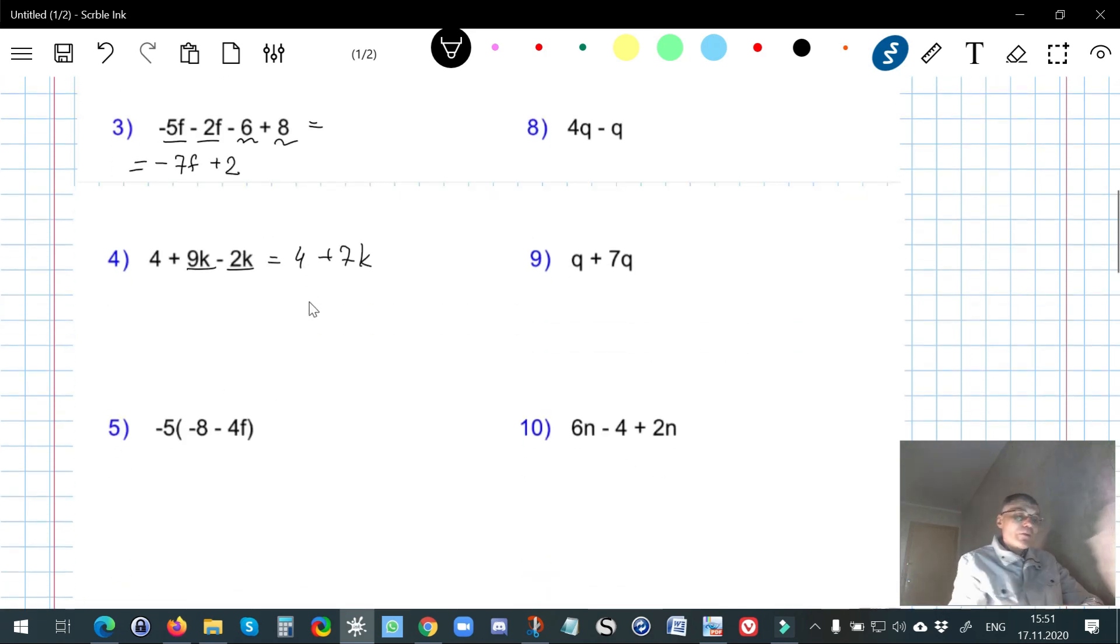Here we have to distribute, we have to not forget about the sign. Negative 5 multiplied by negative 8, it's positive 40. And negative 5 multiplied by negative 4, it's positive 20, and it's f.